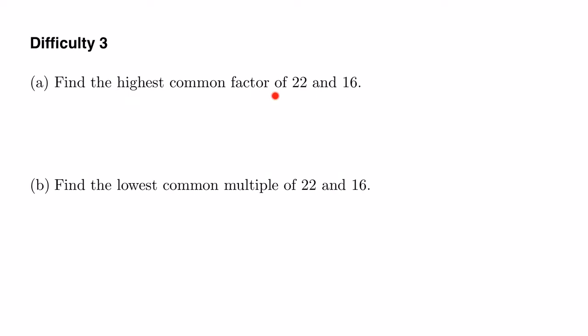To find the highest common factor what we can do is list out all of the factors of 22 and all of the factors of 16 and look for the biggest number that is in both lists. That will be a common factor of 22 and 16 because it's in both lists, and because we're looking for the biggest of those numbers that will be the highest common factor.